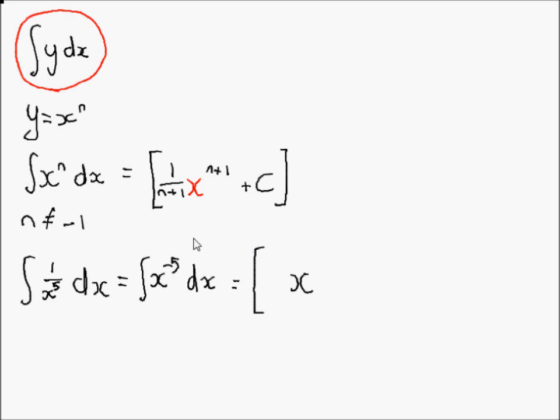Now n plus 1. Don't make the mistake of making that 6. Don't just plus 1, think: 5 plus 1 is 6, but minus 5 plus 1 is minus 4. The sign of the index does matter. Minus 4, that's the power.